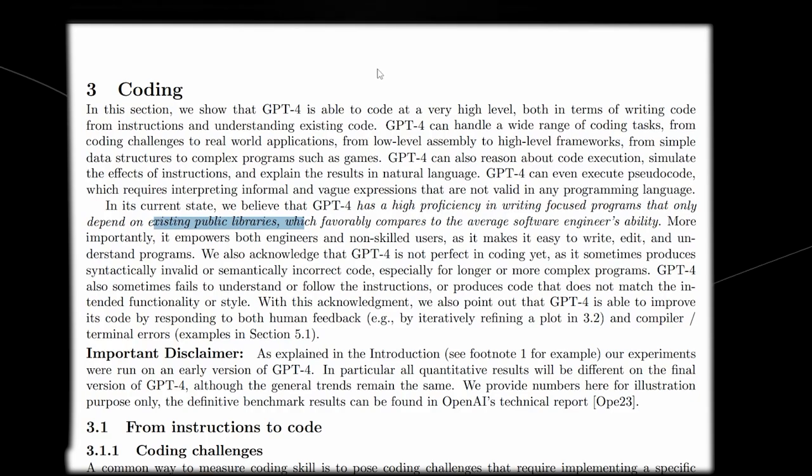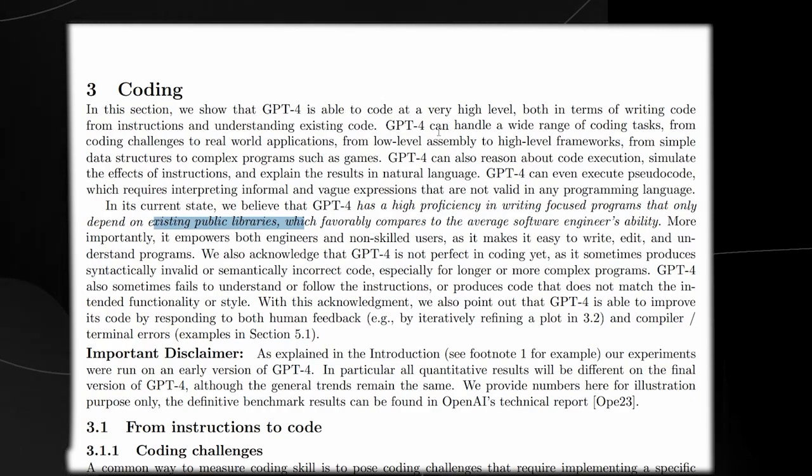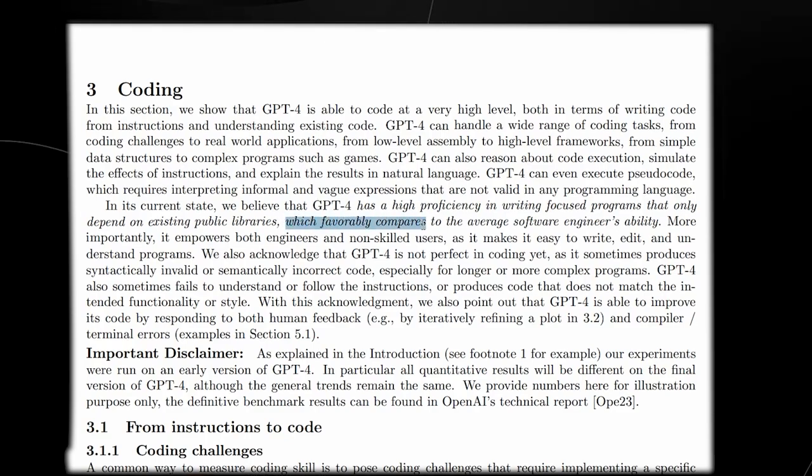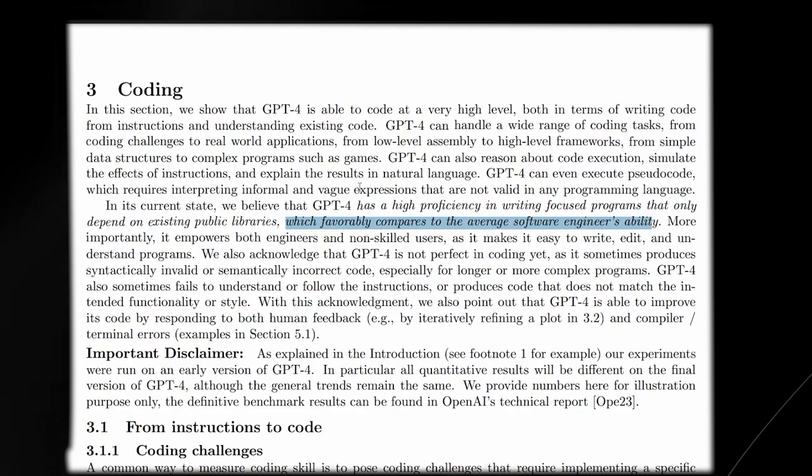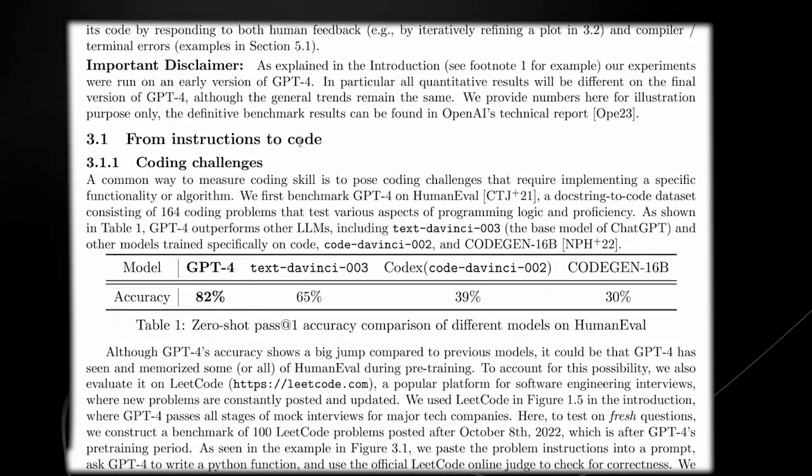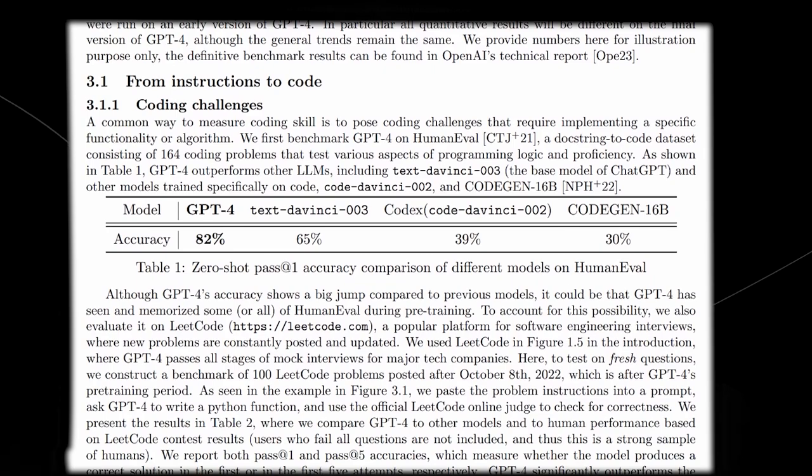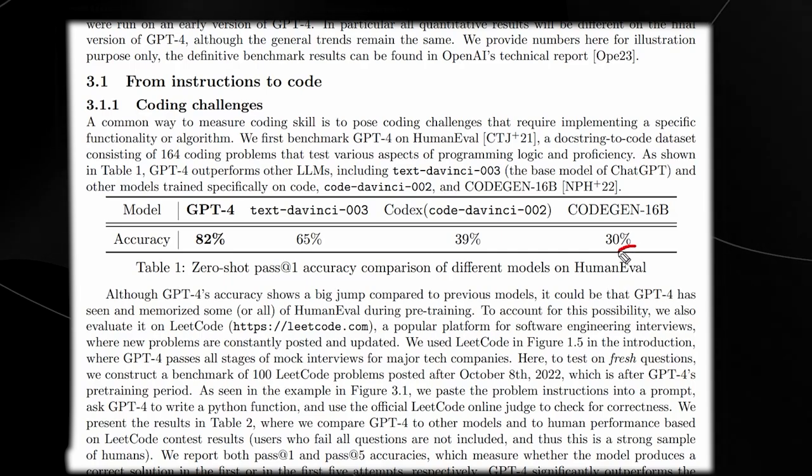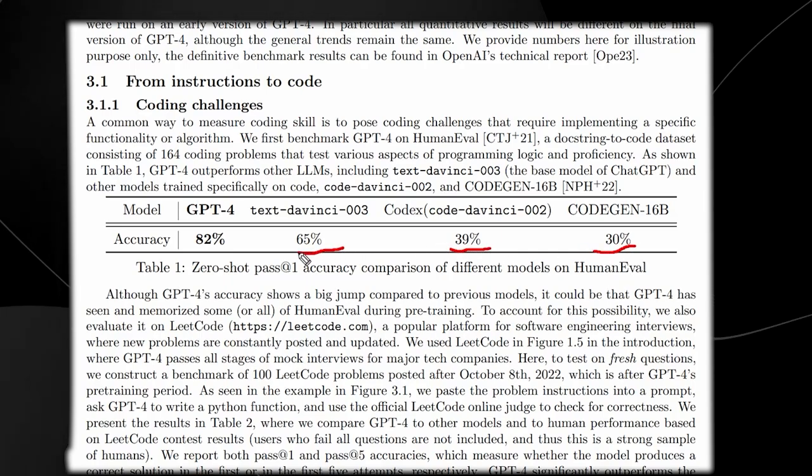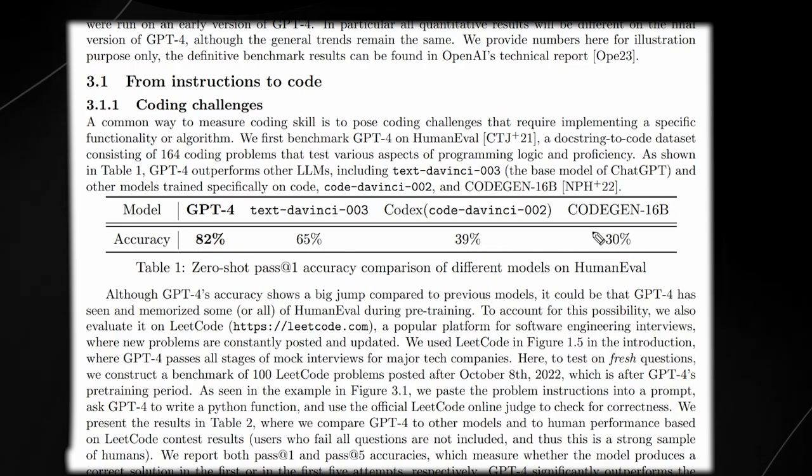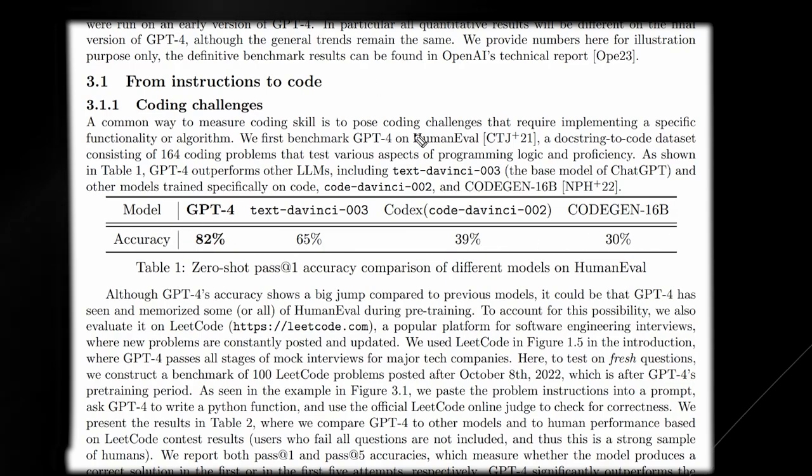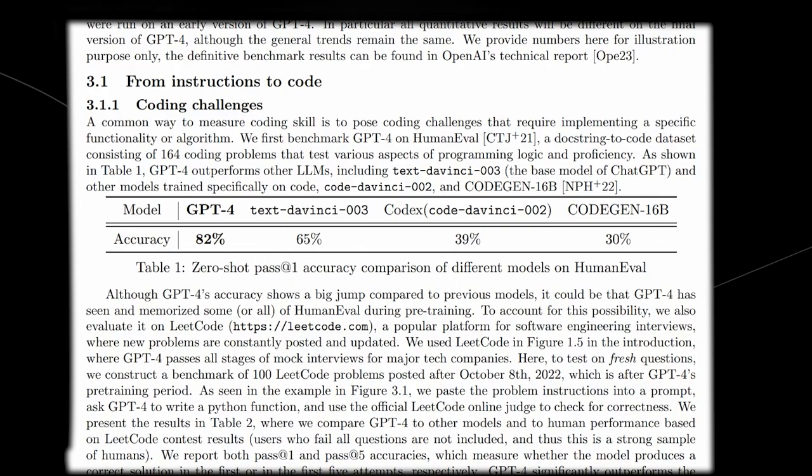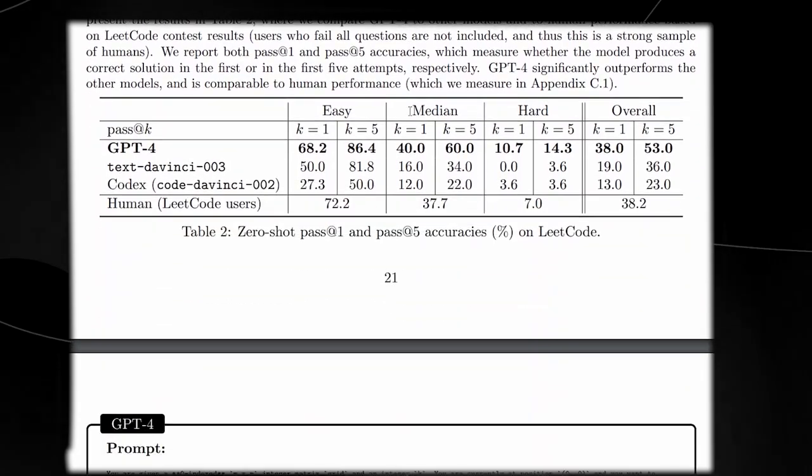Something that we did previously discuss was that GPT-4 does have the ability to code. It does say here that GPT-4 has the ability to code, which favorably compares to the average software engineer's ability. It's definitely very interesting to see how far GPT has come, especially since the earlier versions. You can see that its ability to code has progressively increased from 30% to 39% to 65%, all the way up to 82% now with the accuracy on this specific test.